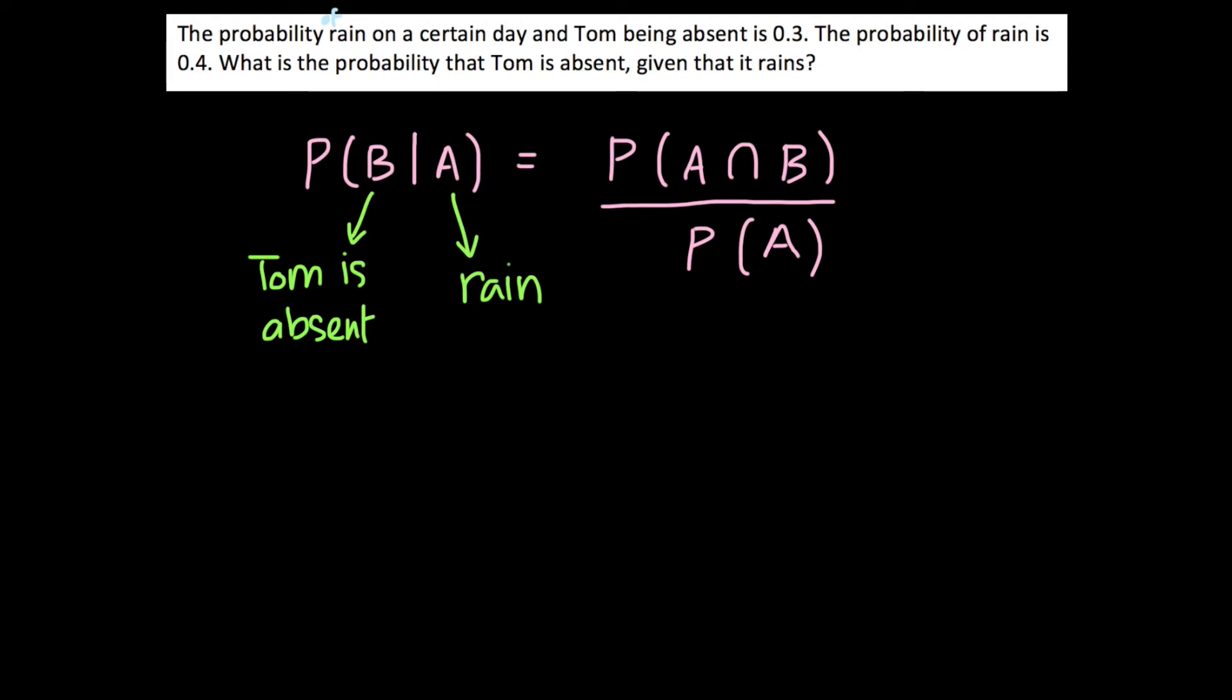And to do this, we simply substitute values into our formula. The probability of A and B would be the probability of rain and Tom being absent. And that's our very first line here. The probability of rain on a certain day and Tom being absent is 0.3. So that would be our numerator. And the denominator is simply the probability of rain, which is 0.4. So our conditional probability is 0.3 over 0.4, which is equal to 0.75.